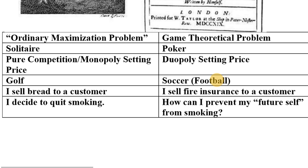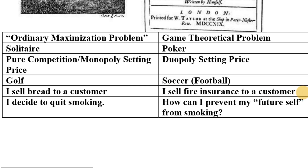Golf is probably a good single-player game — more of a game of skill. Soccer or American football would be more game-theoretic: every player constantly acts and reacts to what the other players are doing. Another ordinary maximization example: I need to decide the price and quantity of bread to sell to a customer — that's it. But selling fire insurance to a customer has the potential for action and reaction.